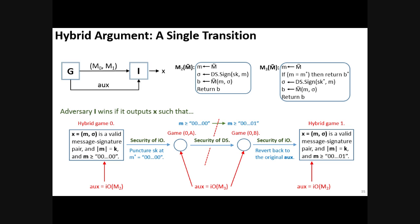And finally, we simply revert back our auxiliary information from obfuscation of M3 to obfuscation of M2.